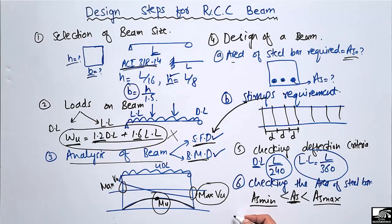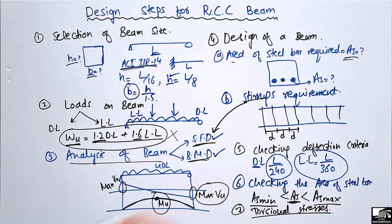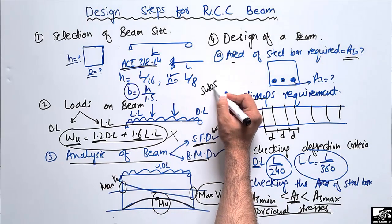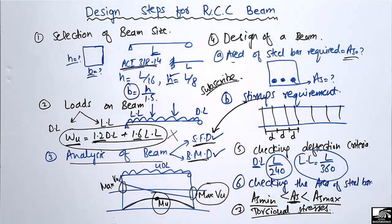The seventh and final step is checking for torsional stresses in the beam. These were all the important steps required for the design of an RCC beam. Hope you guys understand. Don't forget to subscribe to our channel for daily simulation engineering videos. Thank you for watching.